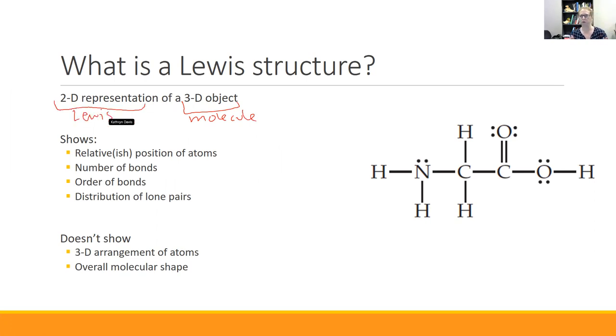So paper is flat, so Lewis structures are flat. And this is an example over here of a Lewis structure. What can I tell from it? Well, I can show relatively where the atoms are. This nitrogen is next to this carbon, is next to this carbon, and here's where the oxygens are. I can know where the atoms are.